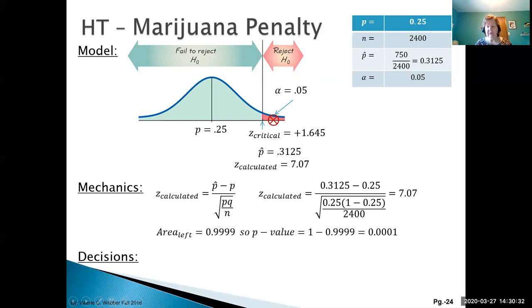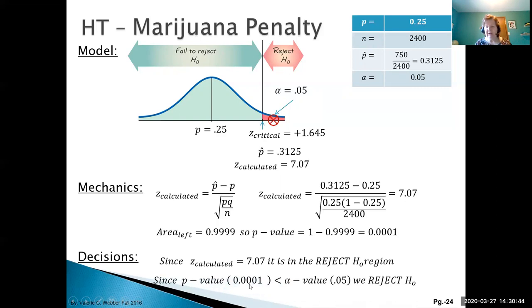Now we can move on to our decision phase. Z calculated, 7.07, is clearly in the reject region. Our p-value, 0.0001, is quite a bit smaller than our alpha value of 0.05. So we're rejecting H naught, and notice that both of these methods have the same result.